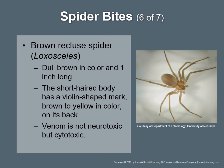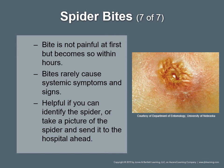Brown recluse spider (Loxosceles): dull brown in color, approximately one inch long, with a violin-shaped mark on its back — commonly called the fiddleback spider. It lives in dark areas. Venom is not neurotoxic but cytotoxic. The bite is not painful at first, but becomes so within hours. Over the next several days, a scab of dead skin, fat, and debris forms and digs into the skin, producing a large ulcer. Bites rarely cause systemic symptoms. Identify the spider if possible and either safely bring it to the hospital or photograph and send it ahead.